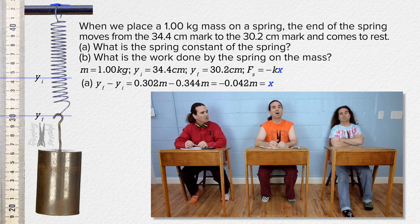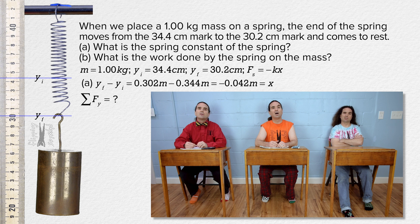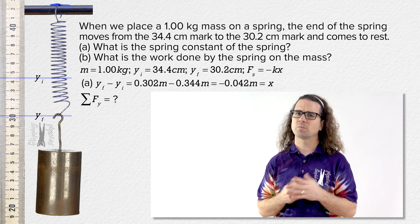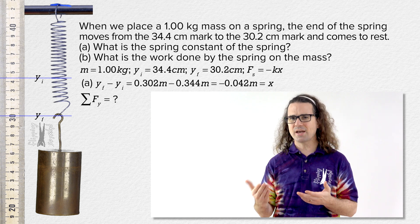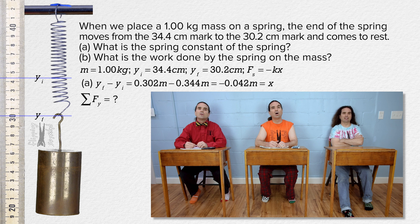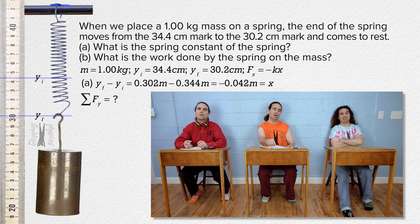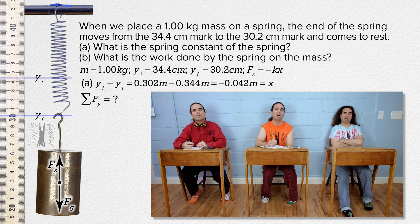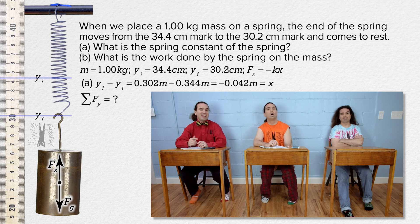Bo, what should we do from here? We can sum the forces in the y direction — that is the force of the spring. You cannot sum the forces until you have drawn the free body diagram. In the free body diagram, the force of gravity is down and the force of the spring is up, because the displacement of the mass is down and the force of the spring is always opposite the direction of the displacement from equilibrium. That is what the negative in Hooke's law equation means.